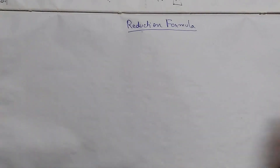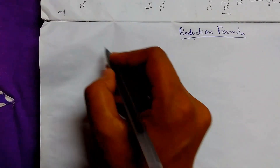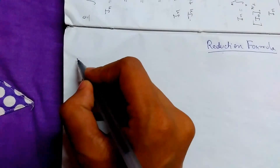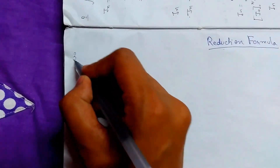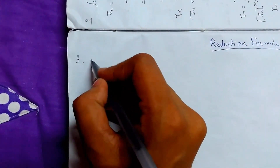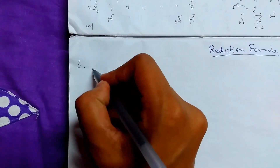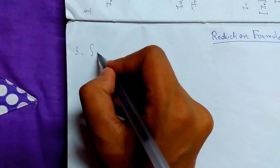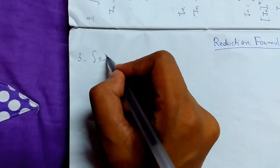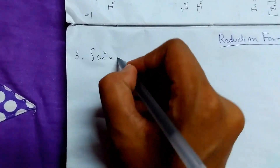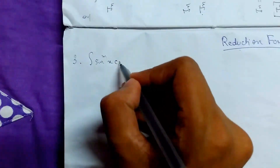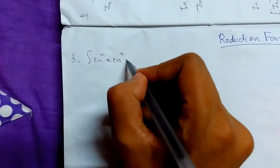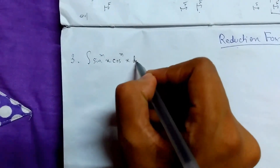Welcome back guys. Today we will be continuing with reduction formula. So today we will be starting about Type 3, which is the integration of sin to the power m times cos to the power n of x dx.